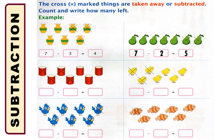Below, there were seven drums and among them four were cross-marked. So how many remain unmarked? Counting the unmarked: one, two, three — three drums were unmarked. That means seven subtraction four is equal to three.